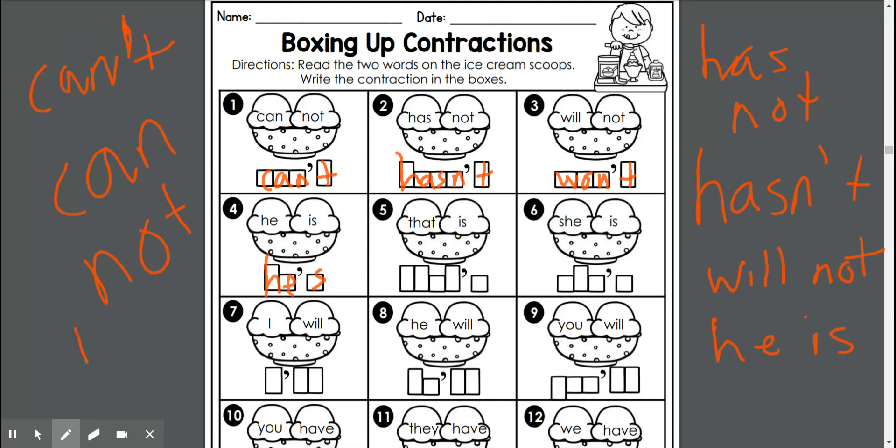We're going to go ahead and do one last one, and then I'll set you off on your own. We're going to do that is. So if we take a look at it, we have the original word of that, apostrophe S.